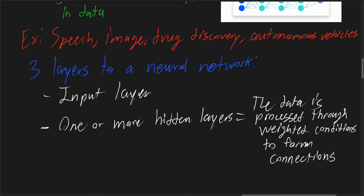And finally, the output layer, which produces the final decision. It could be a percentage of accuracy or a final output that one is looking for in a neural network.